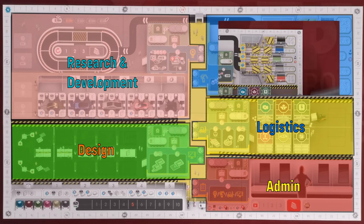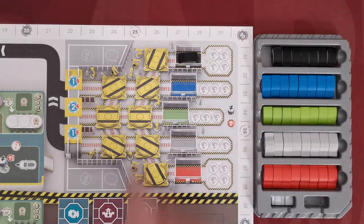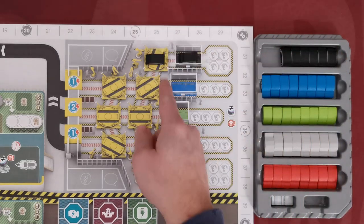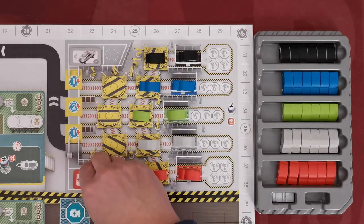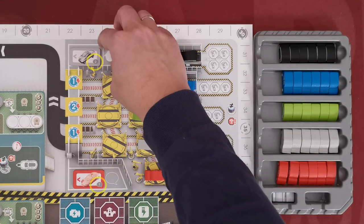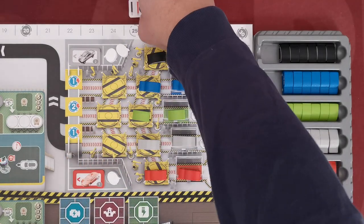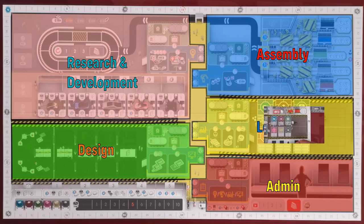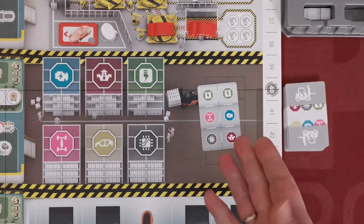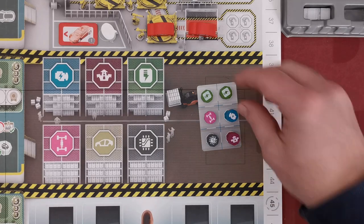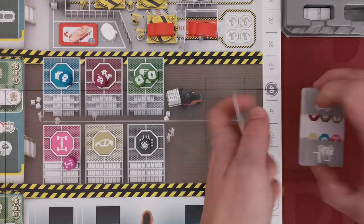Now let's move to assembly setup. First, place the car train next to the board. Then for each car color, place one car to the corresponding colored space on the board and then a second one to the space to its left. Shuffle the demand tiles, choose two at random, and place them in the indicated spaces, then place speech tokens next to these spaces as indicated on the tiles. The rest of the demand tiles are placed in a face-down stack next to the board. For logistics setup, shuffle the order cards and place them face down next to the board. Flip the top card face up, find the depicted car parts and place them in the corresponding warehouse spaces, then place this card face down at the bottom of the stack.